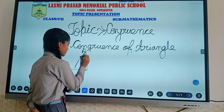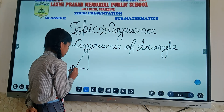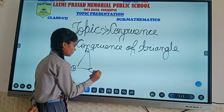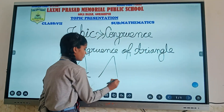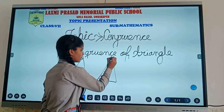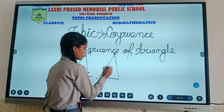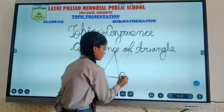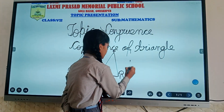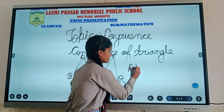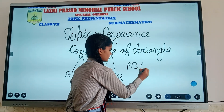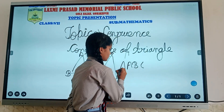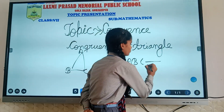Example: Triangle A, B, C is congruent to triangle B, R, A. Triangle A, B, C is congruent to triangle B, R, A, B, C.